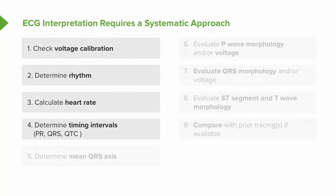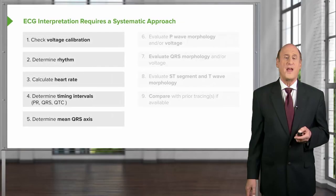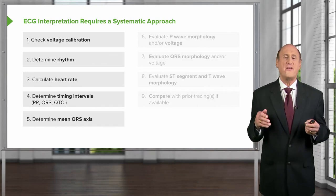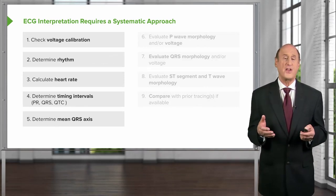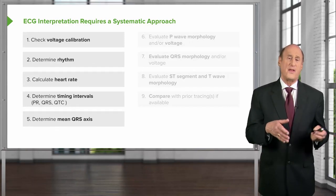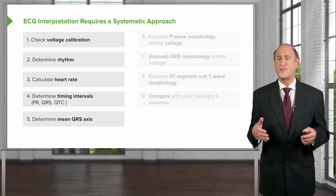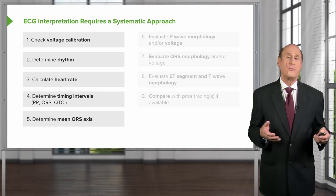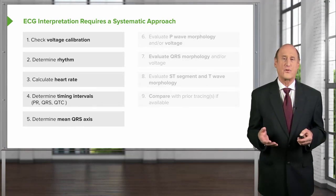Next, you do the timing intervals: the PR interval from the beginning of the P wave to the beginning of the QRS, the QRS duration representing ventricular depolarization, and the QT interval from the Q wave to the end of the T wave representing the whole contraction and resetting of the ventricle. You then determine the electrical axis — the main vector force of electrical depolarization and what direction it's going. There is a normal range; abnormalities of ventricular mass can produce abnormal electrical vectors.